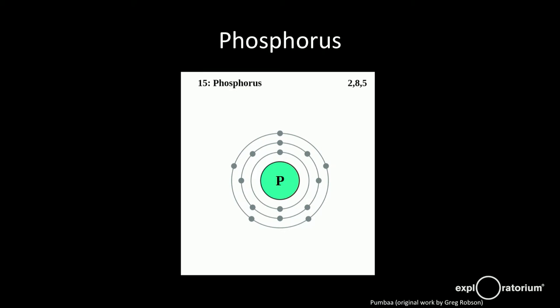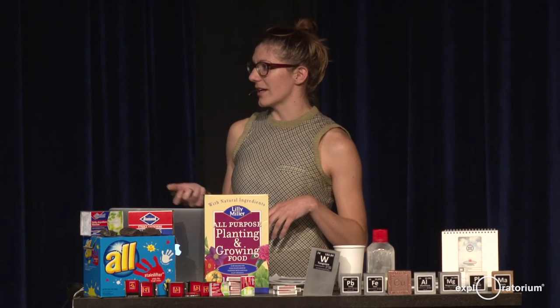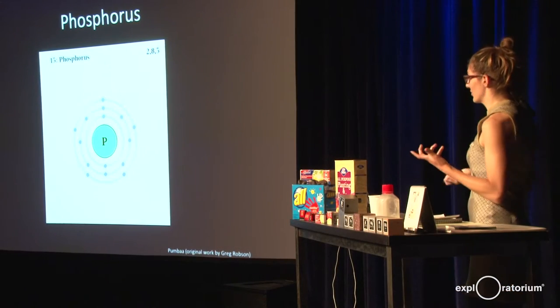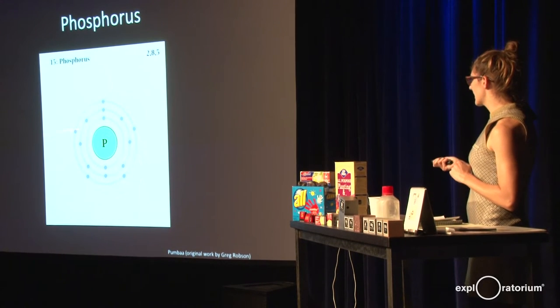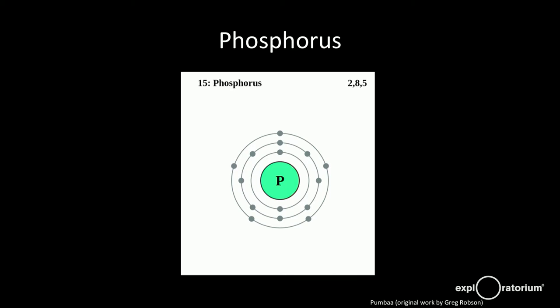Here's your standard phosphorus atom. We're going to be talking a little bit today about valence electrons, and as boring as that sounds, it's really cool. If you count the outer electrons, there are five in the outer shell, which means it can hold three more. So it's actually a fairly reactive element. And as Ron said, when we find it in nature, we don't find it by itself — it's already reacted with something else.